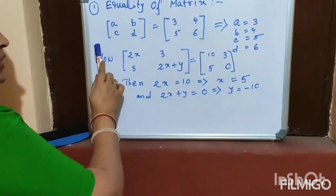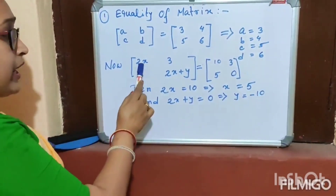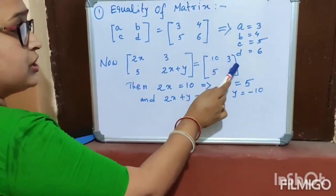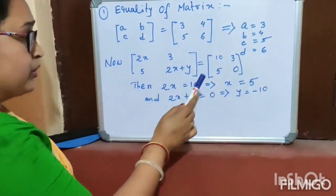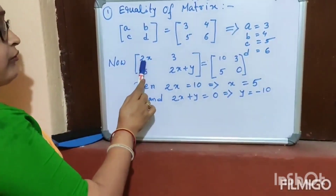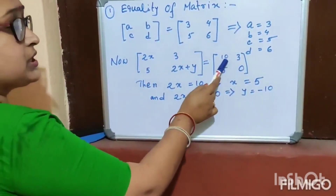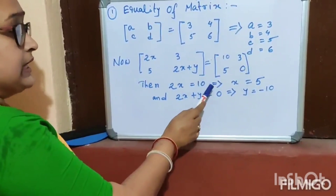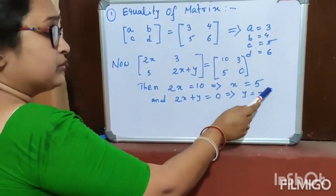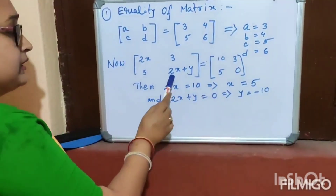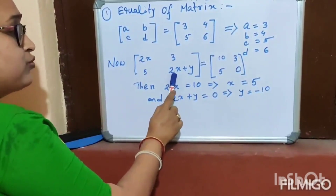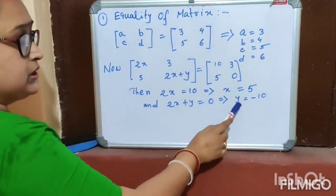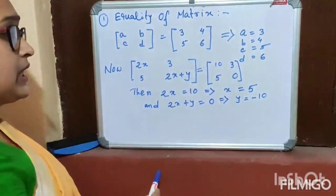Now this is an example: [2x, 3, 5] and [2x+y] is equal to [10, 3, 5] and [0]. First element of LHS equal to first element of RHS: 2x is equal to 10, implies x is equal to 5. And fourth element: 2x plus y is equal to 0, means y equal to minus 10.